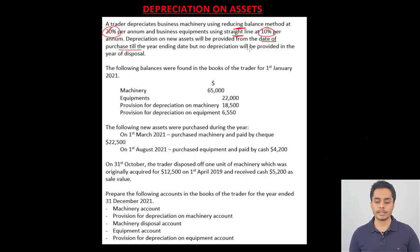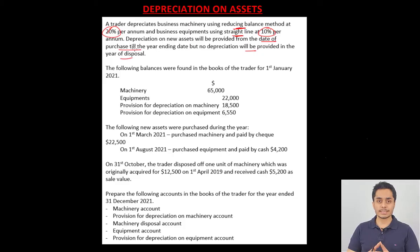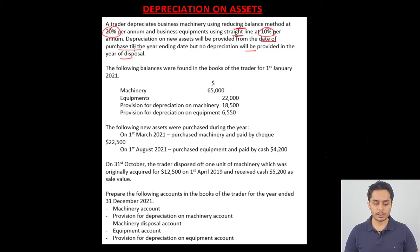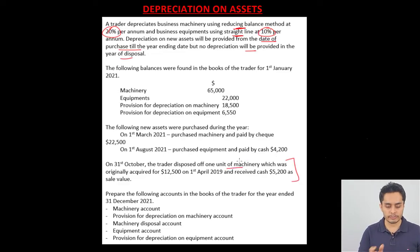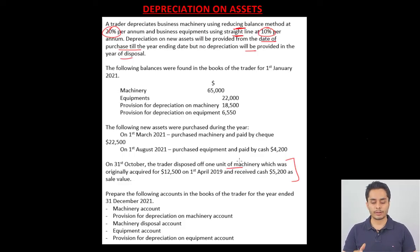No depreciation will be provided in the year of disposal. So if you use the asset for three or four months before disposing of it, you will not provide any depreciation for that part of the year. Balances are given for machinery, equipment, and the provision accounts. Details of new asset purchases are given for machinery and equipment, and then disposal information is given for machinery. They want us to prepare the machinery account, provision for depreciation on machinery account, machinery disposal account, equipment account, and the provision for depreciation on equipment account.